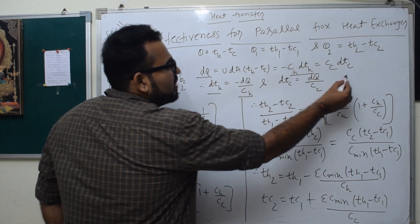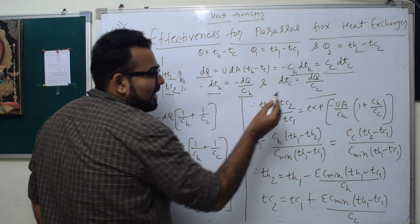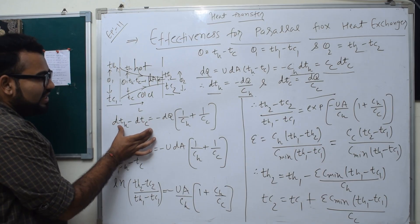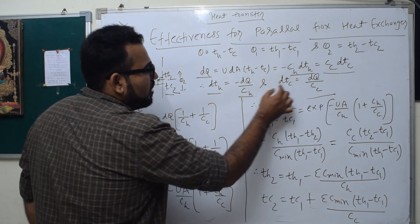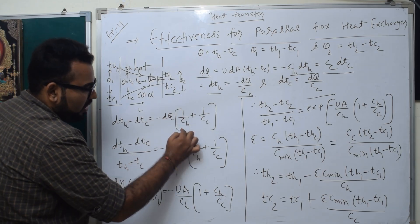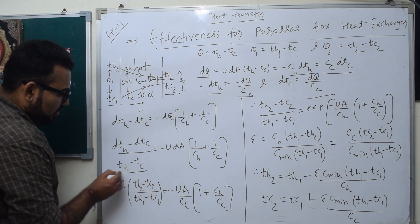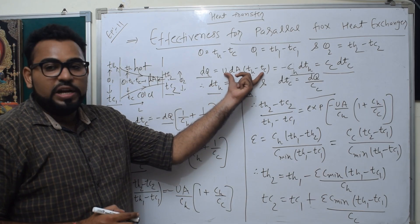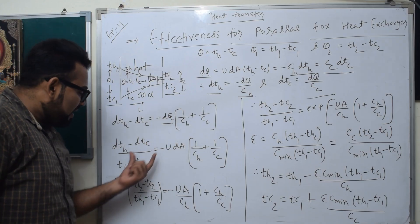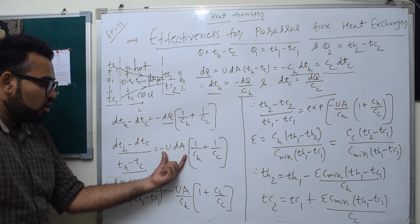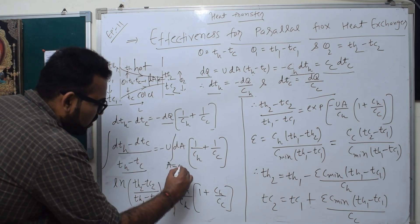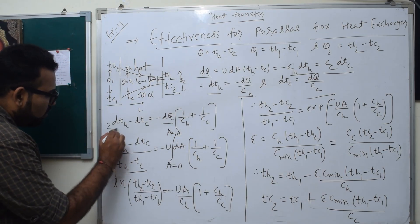From the cold side, dQ equals Cc·dTc, so dTc equals dQ divided by Cc. We substitute for dTh and dTc to find d(Th minus Tc). We then write dQ over the element as U·dA·(Th minus Tc). Dividing both sides and integrating — left side from inlet to outlet, right side from A equals zero to A equals A — we set up the full integration.